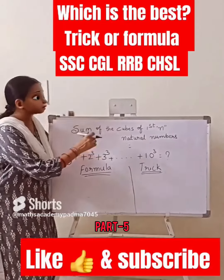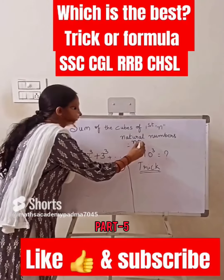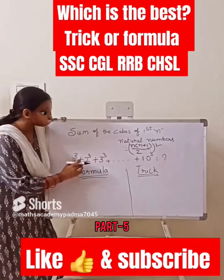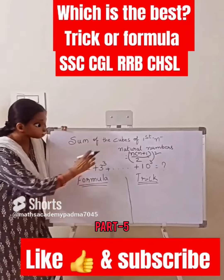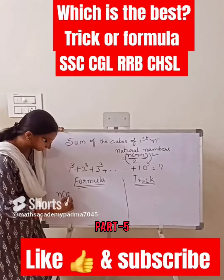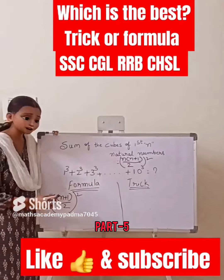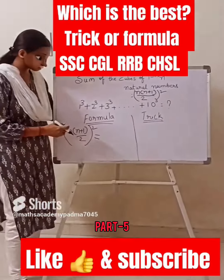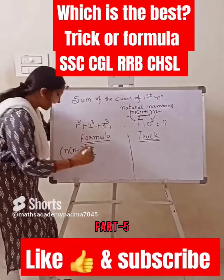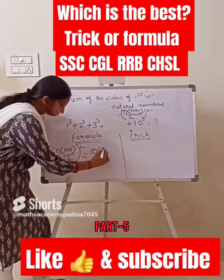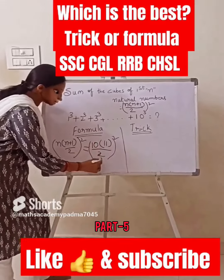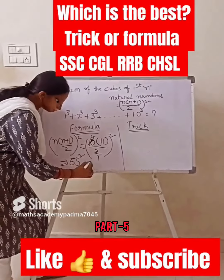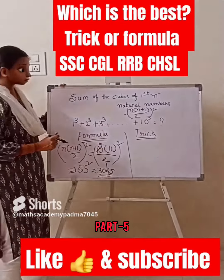Hi friends, the sum of cubes of first 10 natural numbers uses the formula n(n+1)/2 whole square. So 1³ + 2³ + ... + 10³ equals this formula, where n is the number of terms. Here n equals 10, so we get 10 into 11 divided by 2, which is 55. And 55 squared equals 3025.